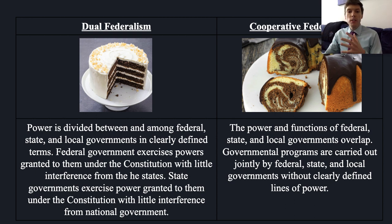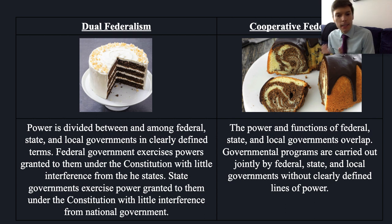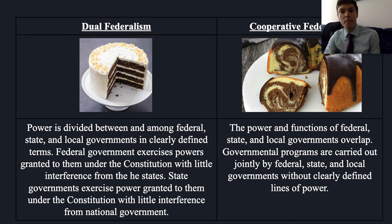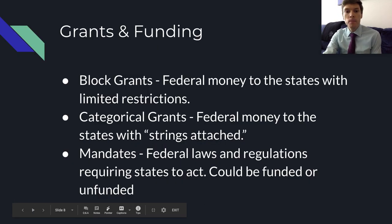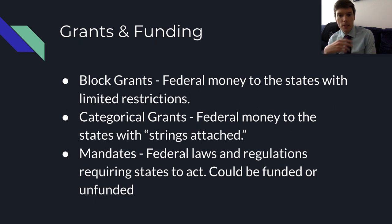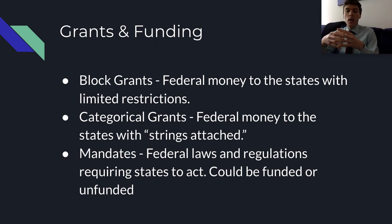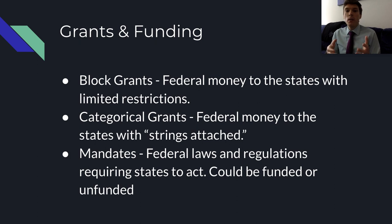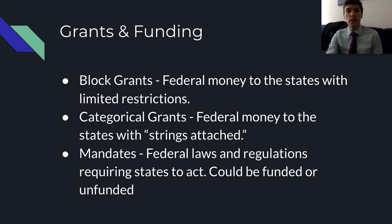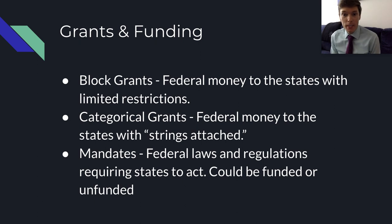Cooperative federalism emerged as society advanced and technology improved. This is where the power of federal, state, and local governments overlaps — programs can be carried out jointly, or state programs must follow certain federal regulations and mandates. Part of cooperative federalism is an increase in grants and funding. Congress dedicates itself to addressing national issues with federal dollars, collecting federal tax revenues and distributing funds to the states for what it considers national concerns. This process is called revenue sharing or fiscal federalism.